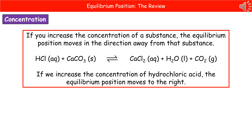The second condition is the concentration. If we increase the concentration of one of the substances in our mixture, the equilibrium position moves in the direction away from that substance. So in the equation there, if we were to increase the concentration of hydrochloric acid, then the equilibrium position is going to move to the right, because that's the direction away from the hydrochloric acid.